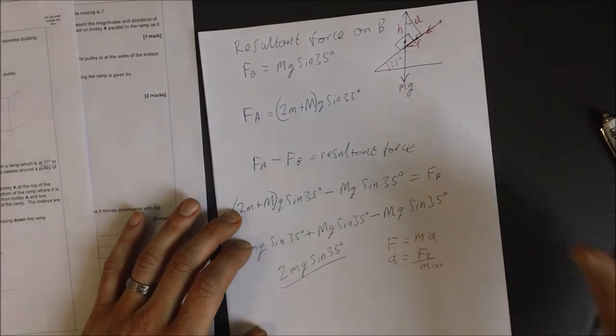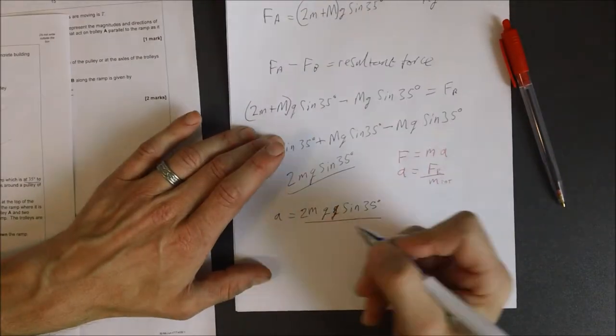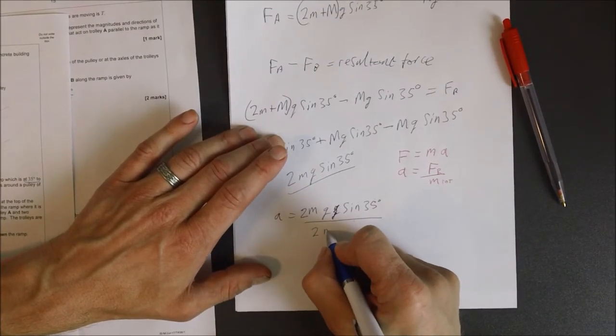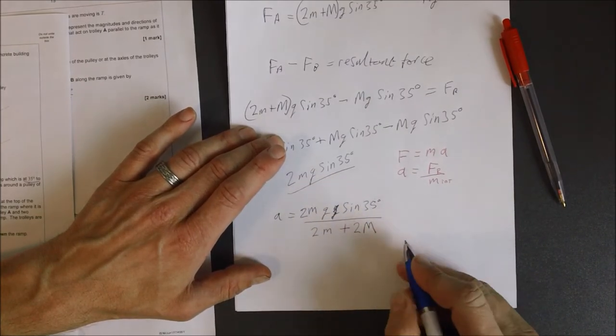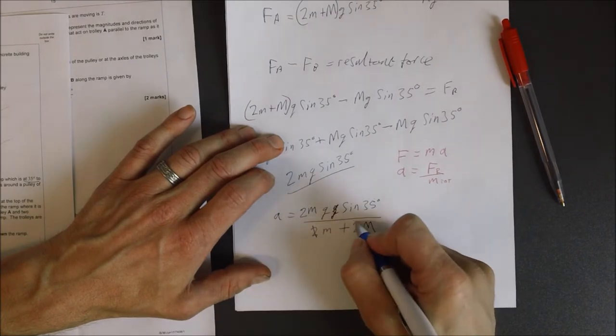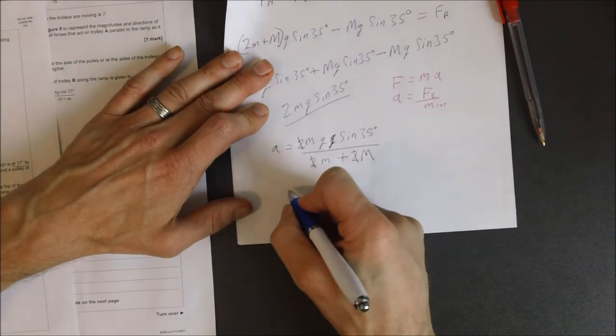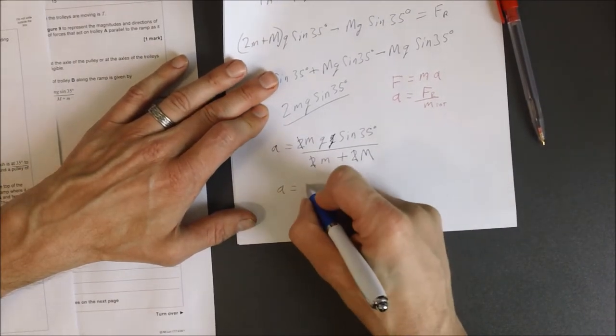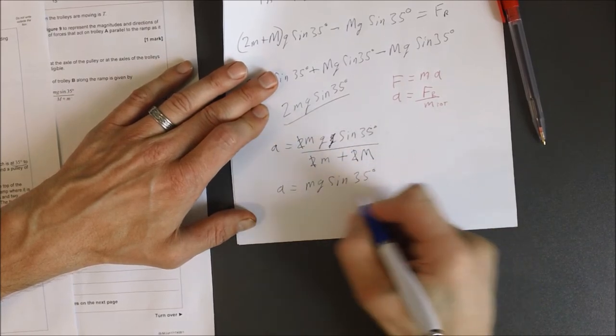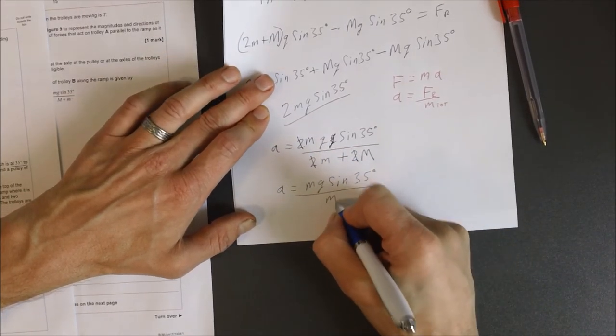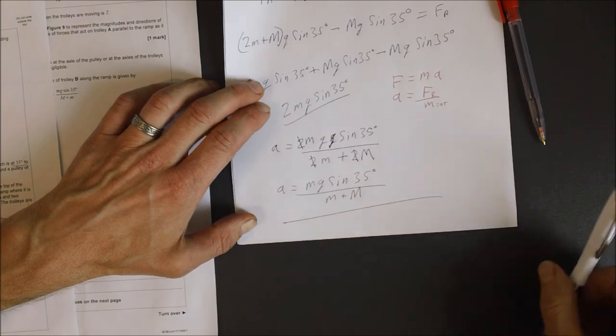Now let's put that into here. Two little m plus two big M. Oh look, two, two, two. Let's divide through by the twos. Then we end up with our final equation, which is what is requested. mg sine 35 divided by little m plus big M. Or in their case, big M plus little m. Same thing. And there's your final answer.